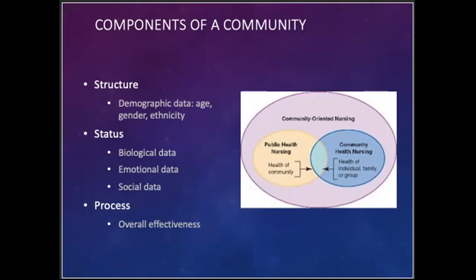Our emotional data includes general indications of mental health and consumer satisfaction surveys about various aspects of the community as compared to other locales. We have social data, which includes crime rates, citizenship involvement in community-wide activities, and general functioning levels of the community members. And then there's process, which describes the overall effectiveness level of the community — for example, do the members of the community perceive that they are part of a group with a common interest, what is the extent of interaction among community members, and does the community have an established form for conflict resolution?